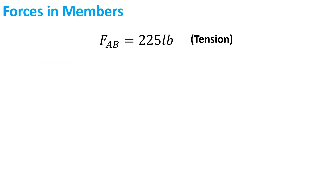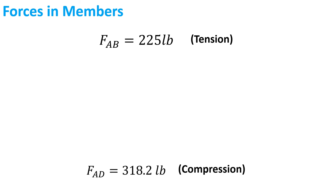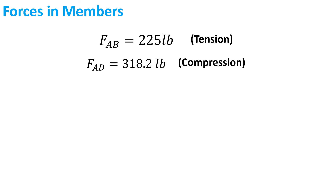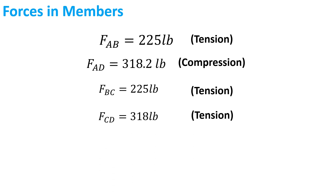The forces in the members are: member AB is subjected to a tension force of 225 pounds; member AD is subjected to a compression force of 318.2 pounds; member BC is subjected to a tension force of 225 pounds; member CD is subjected to a tension force of 318 pounds; and member BD is a zero-force member.